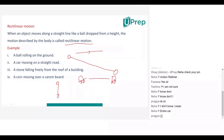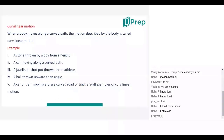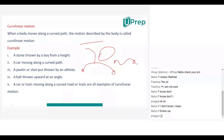Now let us learn about curvilinear motion. When a body moves along a curved path, the motion is called curvilinear motion. In curvilinear motion, the total object also moves, but it moves in a curved path, not a straight line. For example, a body thrown by a boy from a height — as a whole it will move in a curved path, not a straight line. A car moving along a curved path is also curvilinear.